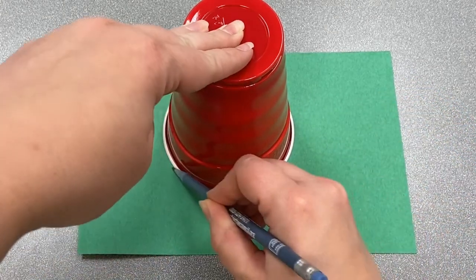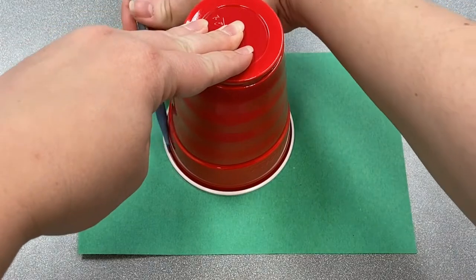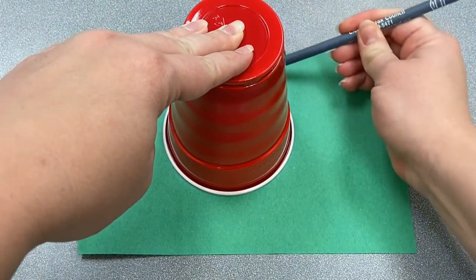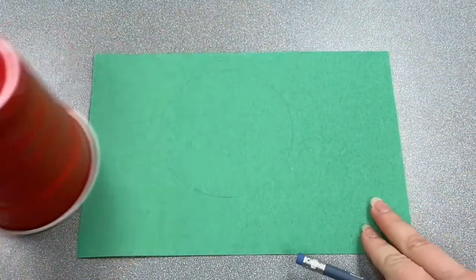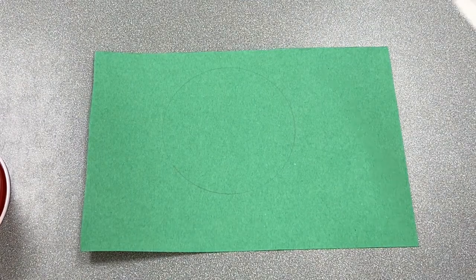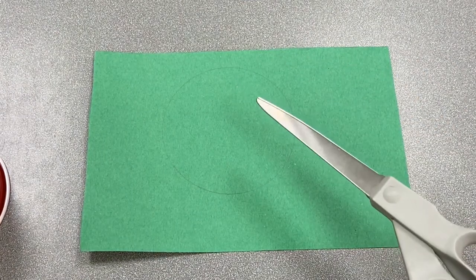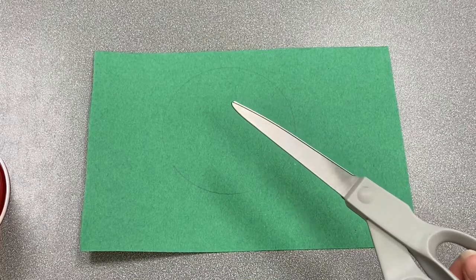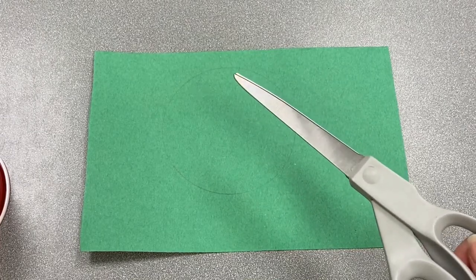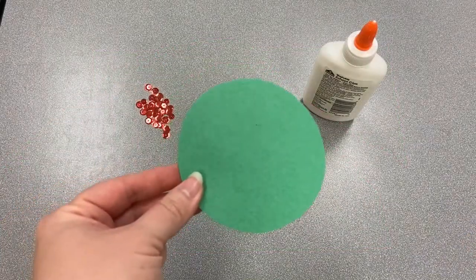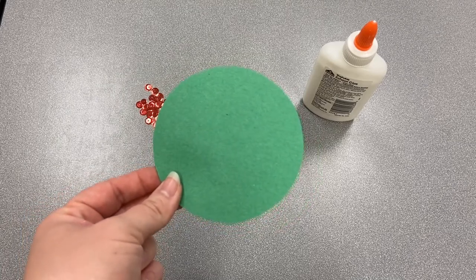Then we're going to use our scissors to cut it out. Please have an adult cut it out for you if you need help cutting with scissors. Now that we've cut out our green circle, which is the top of our tree where the leaves are, we're going to add our sequins.